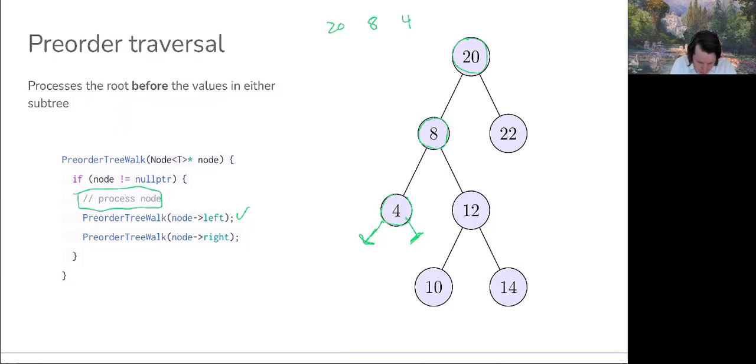So we'd be back up here. We've already processed it, so we'd begin stepping right. So 12.